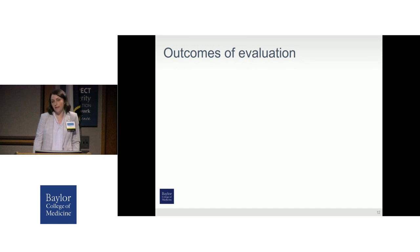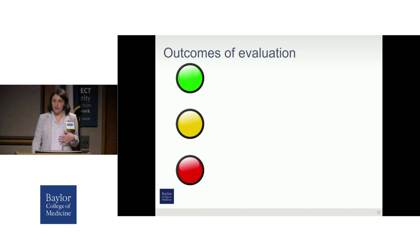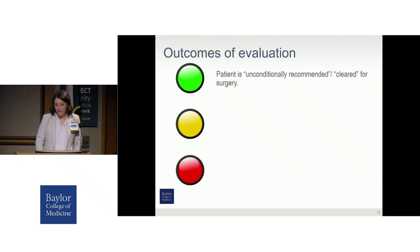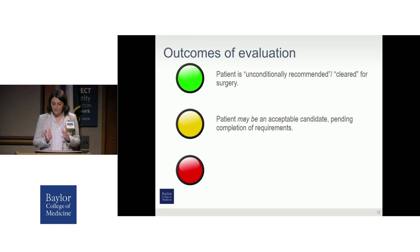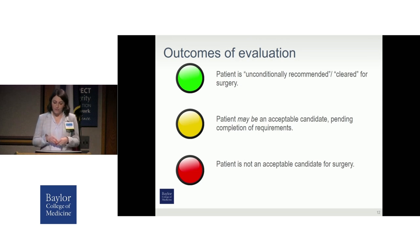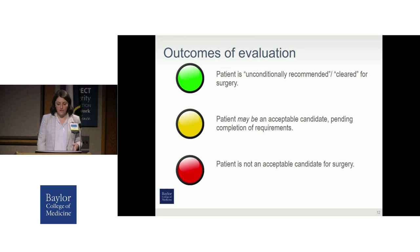Once testing and the interview have been completed, I give patients feedback within that same session. There are three possible outcomes of the evaluation. The first is that the patient is cleared for surgery and can proceed without additional requirements — I would argue this is relatively rare. Most patients fall within the yellow light category, deemed an acceptable candidate pending completion of certain requirements. And then there's a small group of patients who fall within the red light category — not acceptable candidates for surgery — and the question in these cases is whether it's a no-not-now or a no-never.